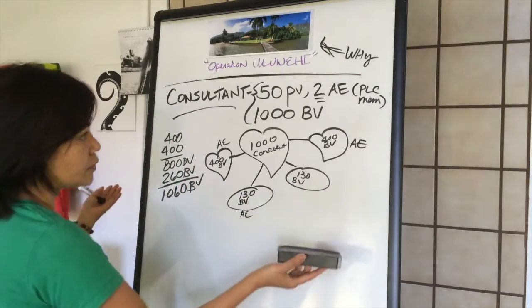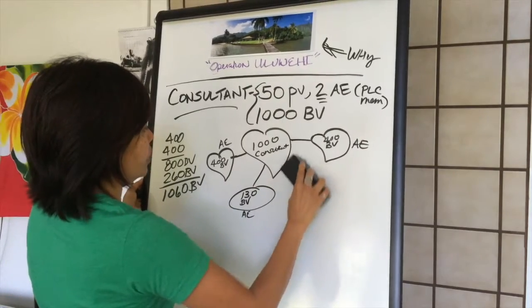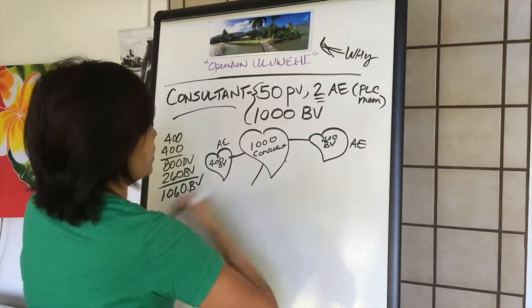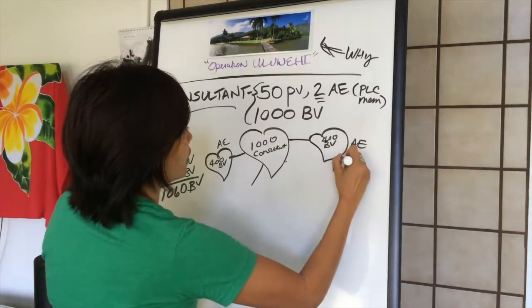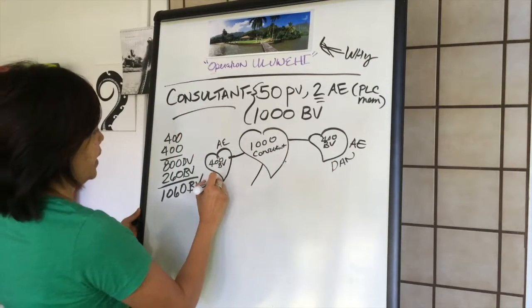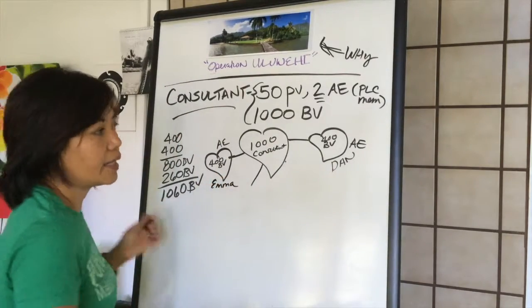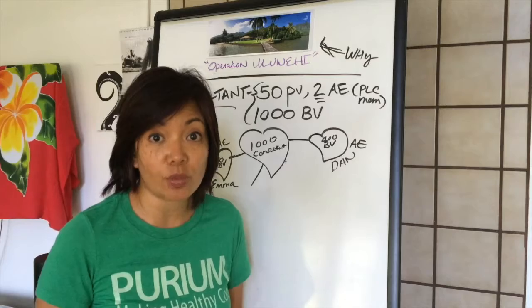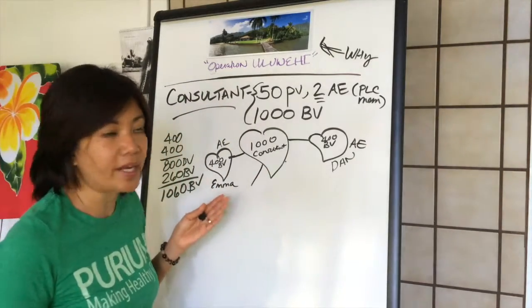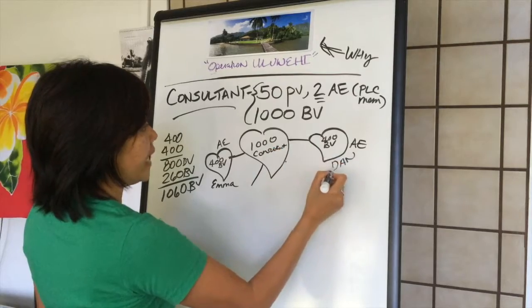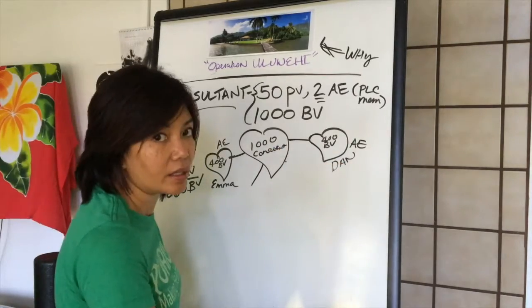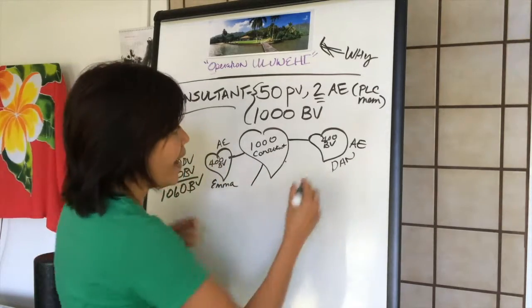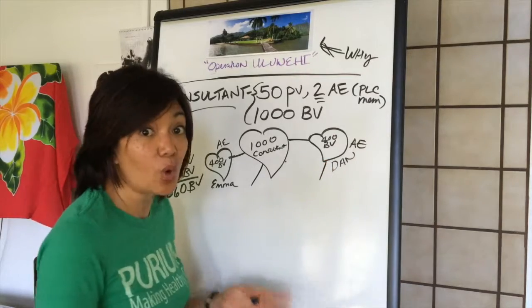Now perhaps you don't have anybody else to enroll. Perhaps you have the 400 and the 400, you've got maybe Dan over here and Emma over here. Well hey, what are we about? We're about duplication. We're about if you help others to succeed, then you succeed, right? So this is what you do. You get them started right. Now you go to Dan and you help Dan have an amazing transformation or cleanse or just an amazing experience on the products. And encourage him to start passing out his own gift cards.